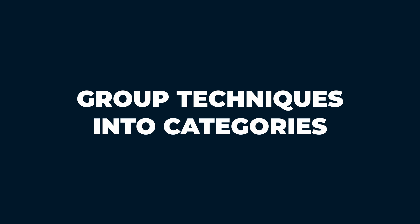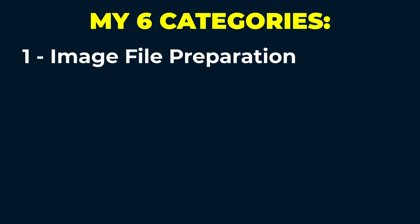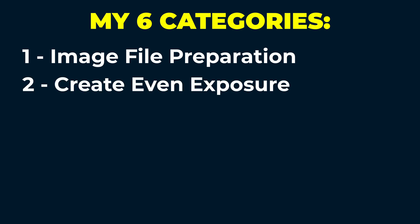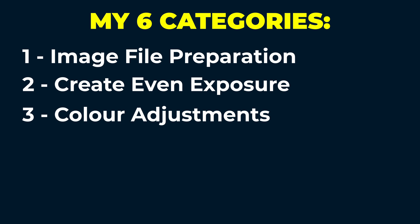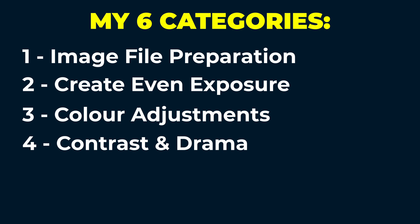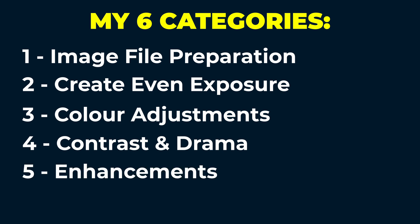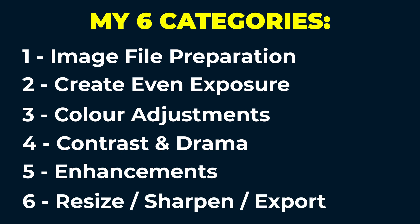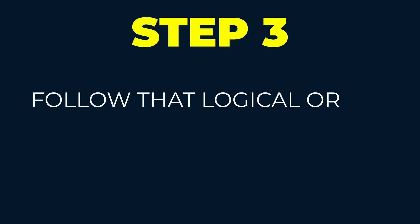Step two is to group your list of techniques into a handful of higher-level categories. Here are the six categories I use: Image file preparation — anything in ACR or Lightroom; Create an even exposure — recovering clipped shadows, highlights, exposure blending; Color adjustments — correcting and tweaking colors; Contrast and drama — techniques affecting light and contrast; Enhance and embellish — creative effects; and Resize, sharpen, export. You can download my free six-stage editing workflow guide from the link on my channel homepage. Step three: once you've mapped out your techniques in a logical order, simply follow that order for all your editing.